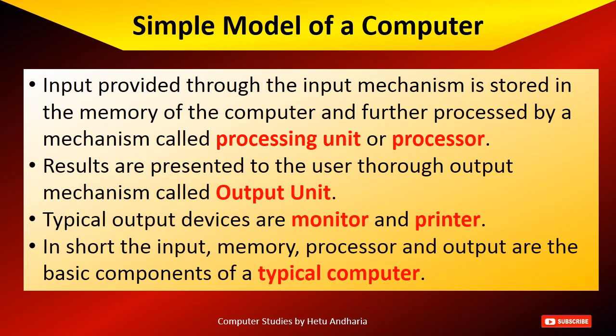Input provided through the input mechanism is stored in the memory of the computer and further processed by the mechanism called processing unit or processor. For example, if I type something in Microsoft Word, that is the input given through the keyboard. Then we get the result on the monitor — in between there is much processing done by the processor. Results are presented through the output unit. Typical output devices are monitor and printer. In short, input, memory, processor, and output are the basic components of a typical computer.